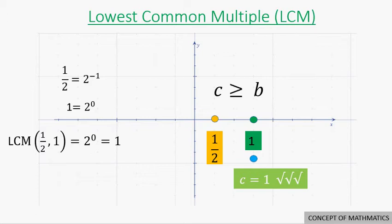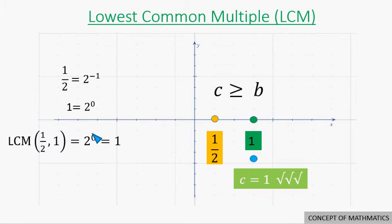Note that since A lies between 0 and 1, it is a fraction. So let A equal one-half. One-half can be written as 2 to the negative 1 power, and 1 can be written as 2 to the 0th power. As per the definition of LCM, the LCM is the product of all prime factors raised to the highest available power. Please note that the highest power of 2 is 0, not negative 1. Hence our LCM is 2 to the 0th power, which is 1. This proves that C is greater than or equal to B.